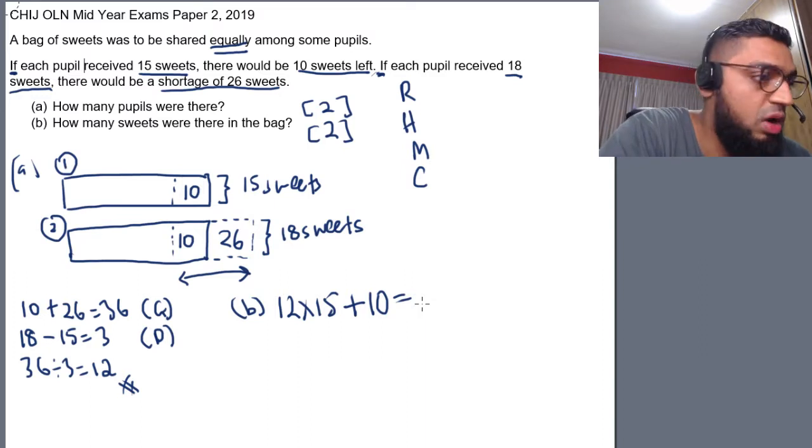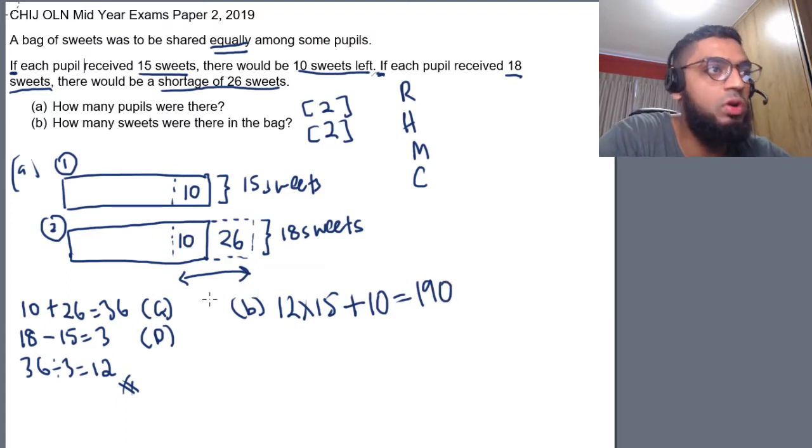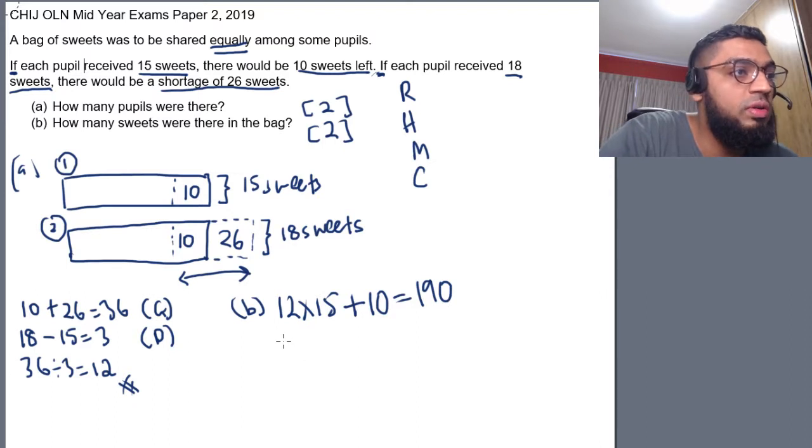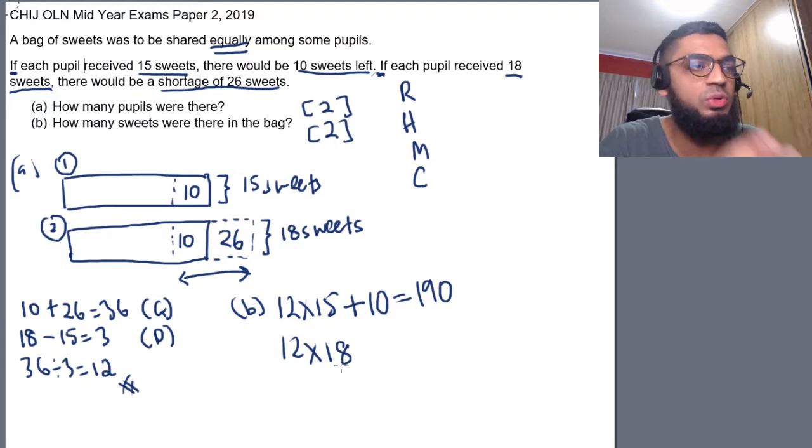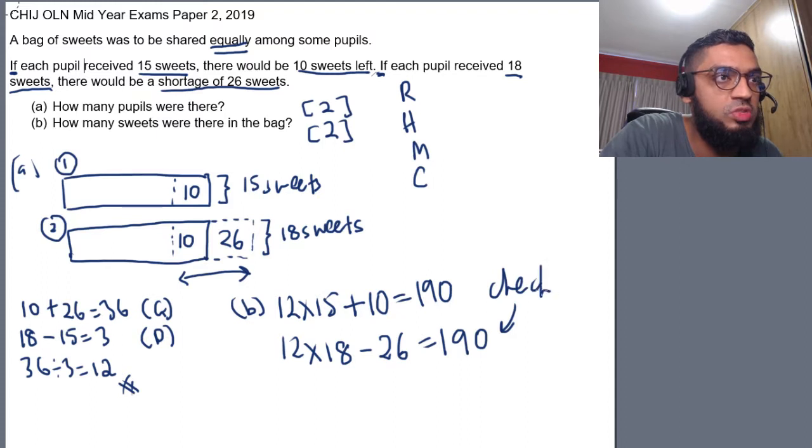Let's do a very quick calculation. 12 multiplied by 15 plus 10. So, we will get answer of 190. Now, you can definitely check using the second model. Second model is when you are giving 18 sweets to each student. It's not enough. You need another 26 sweets. So, 12 multiplied by 18 is too much because your bag of sweets doesn't contain this much. It contains 26 sweets lesser. So, you minus away 26. At the end, you will get an answer of 190.